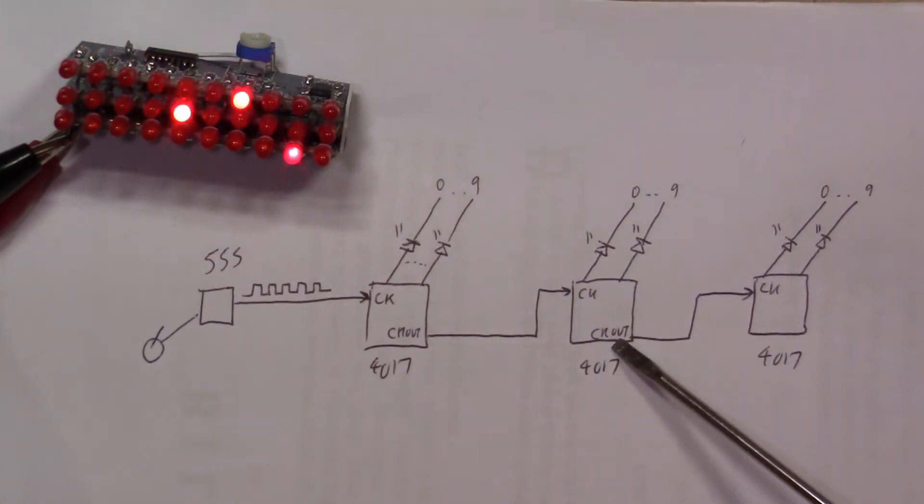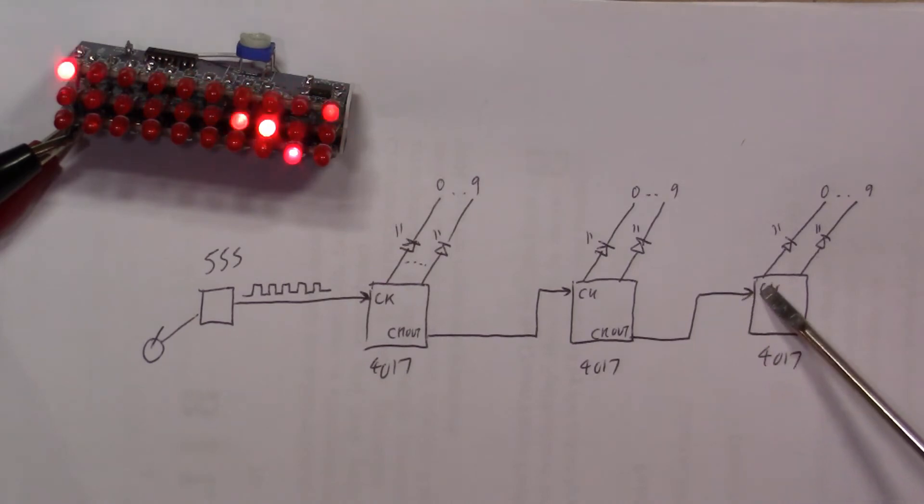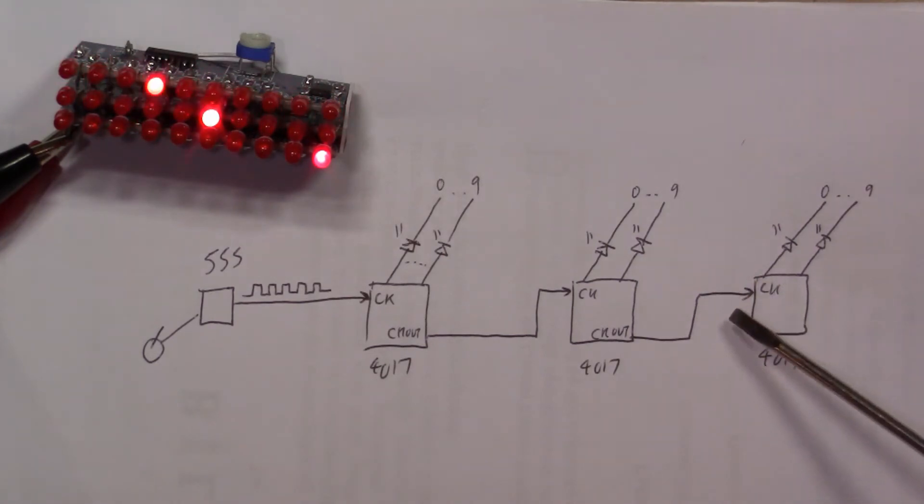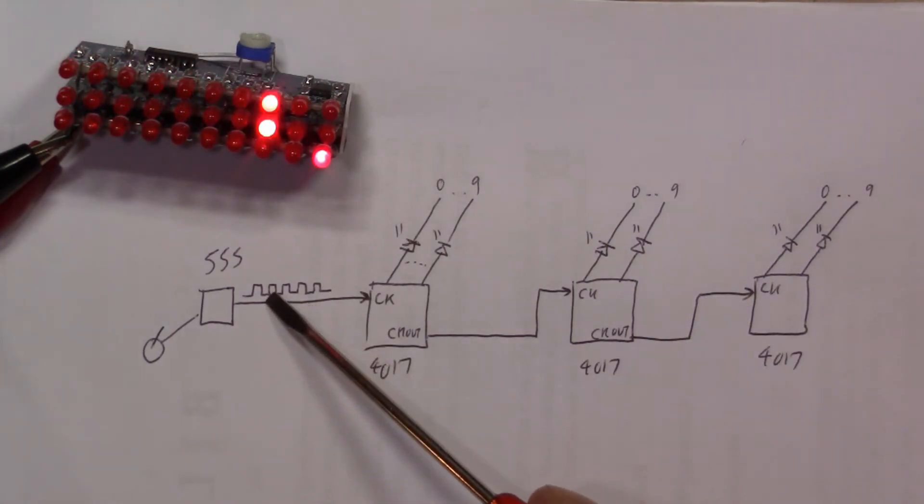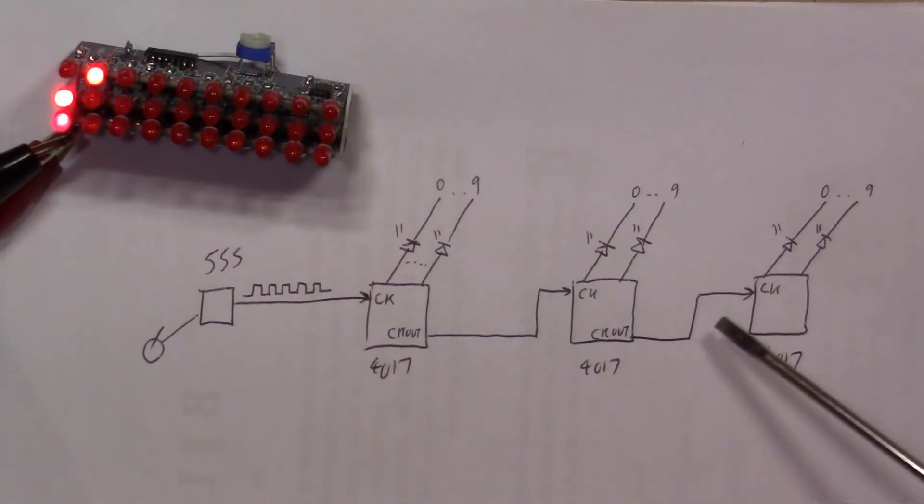And then the clock out from the second 4017 goes to the third 4017 which is the bottom row of LEDs. So this is now a divide by 100, so this clock rate is a hundredth of the square wave pulses going in.